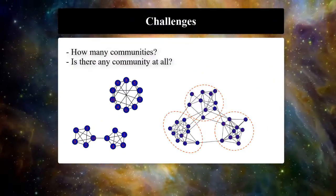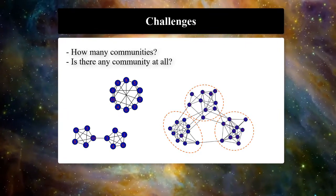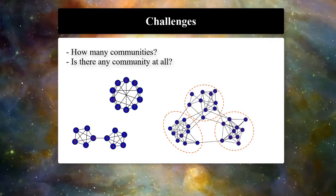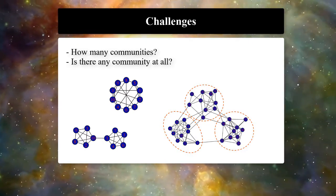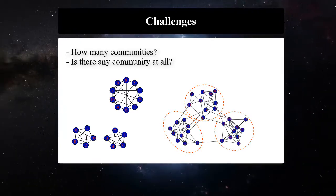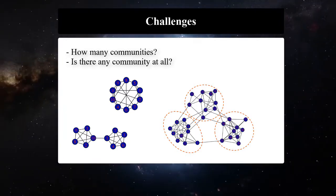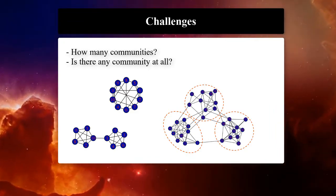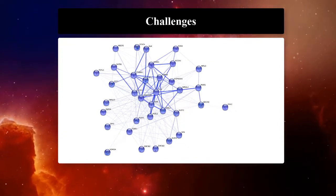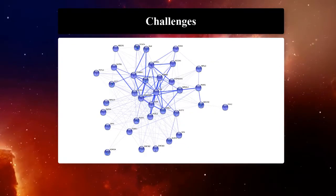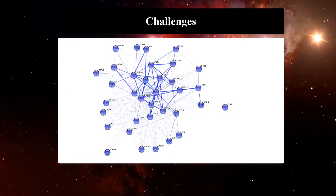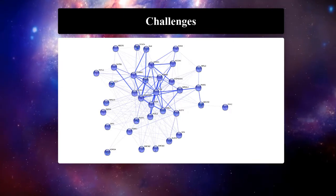One of the main challenges in community detection is the number of communities. Most of these methods have a set of parameters that need to be set before running them. Changing the exact value of these parameters affects the number of detected communities or modules, even if it has not been asked explicitly. For instance, what's shown here is a module of the PPI network found by the MCL method. Many of the genes here are known to belong to a particular biological pathway.